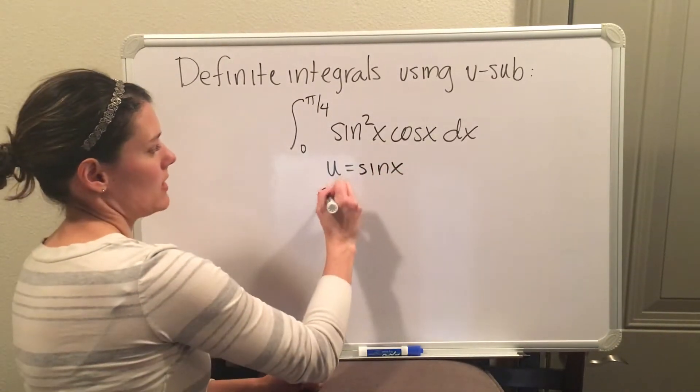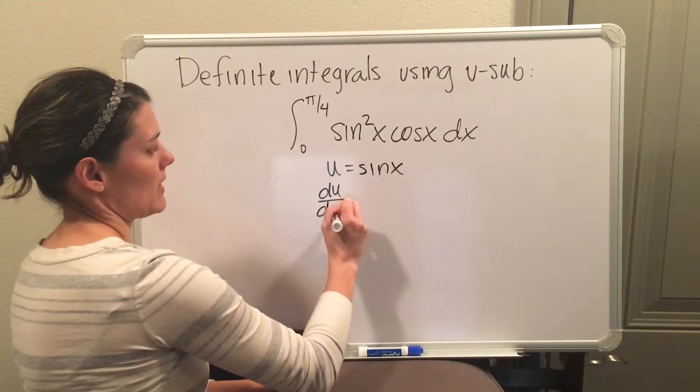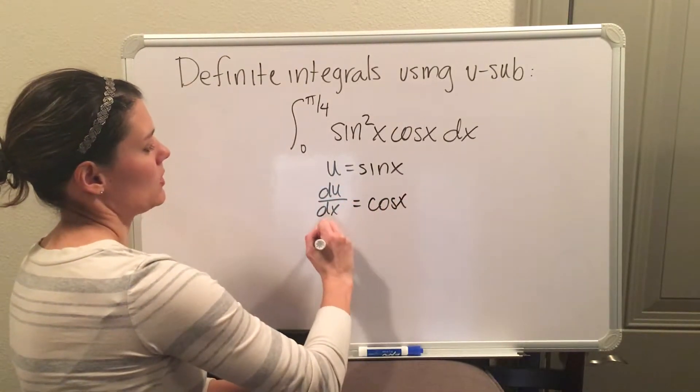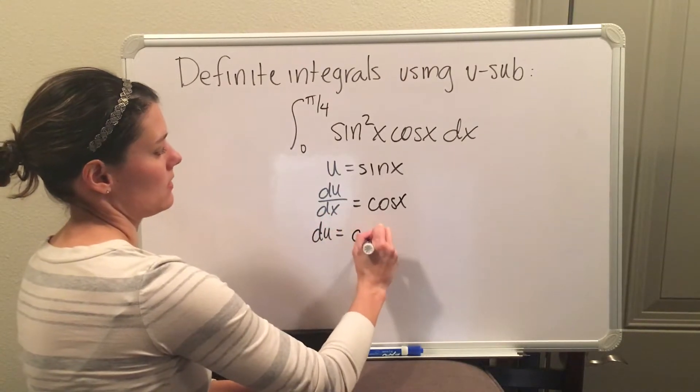After you pick your u, you're now going to take the derivative of u with respect to x, which in this case is cosine, and then multiply the dx to the other side.